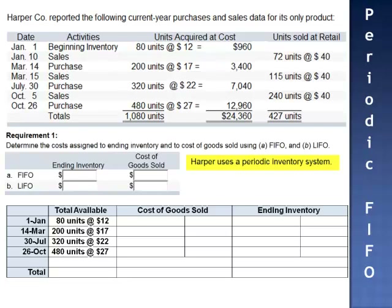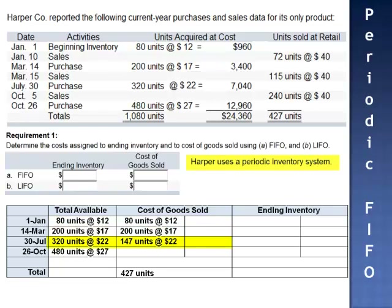Periodic FIFO removes units in chronological order. 427 units were sold, so we expense the first 427 units to cost of goods sold: 80 units at $12, 200 units at $17, and 147 units from the July 30th batch of 320 units. None of the units from the October 26th purchase are presumed to be expensed.